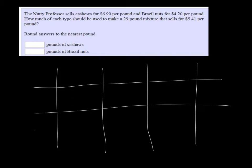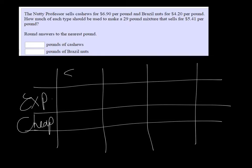All right, so I like to use a table to organize everything. So we have the more expensive cashews, and we have the cheap cashews, and we have their price per pound, the number of pounds, and then that'll give us the total.